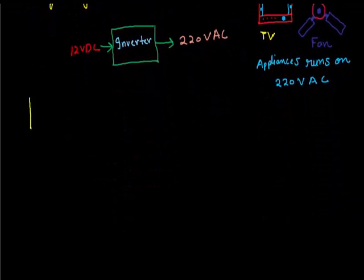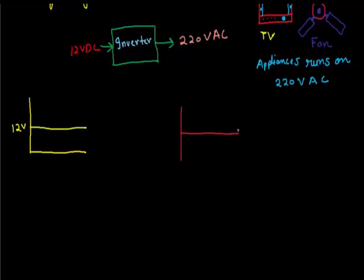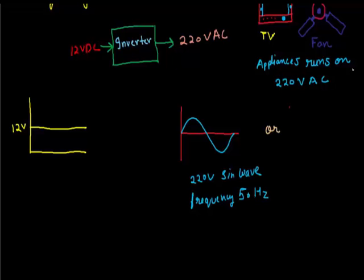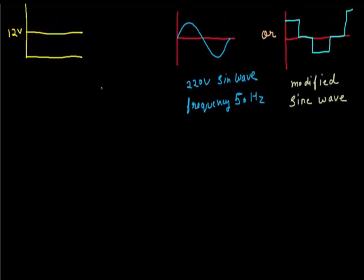When we talk about AC it's very important to define some parameters like waveform and frequency. In our case the grid waveform is sine wave and the frequency is 50 hertz. In this figure the waveform is modified sine wave with a frequency of 50 hertz. I'll talk about this modified sine wave later on.